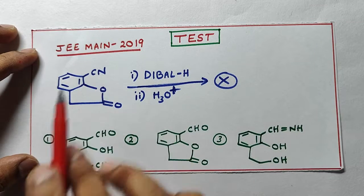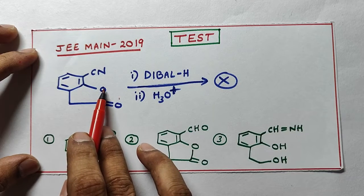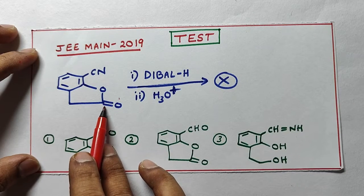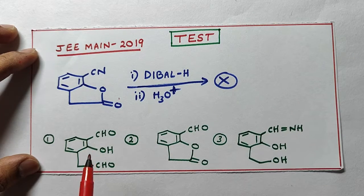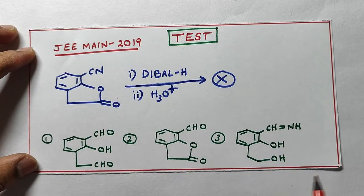I will give the hint: CN is converted into CHO, here cyclic ester converted into here hydrogen, here hydrogen, here hydrogen you have to write it, OH and CHO. Find out correct option and write your answer in comment box.